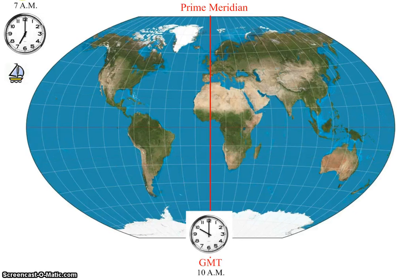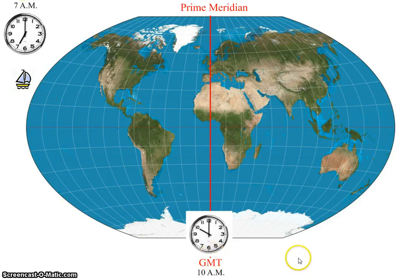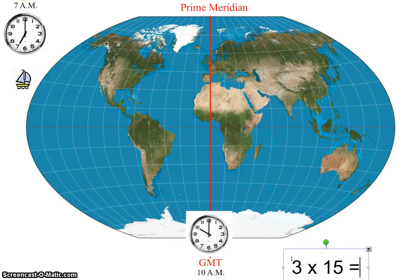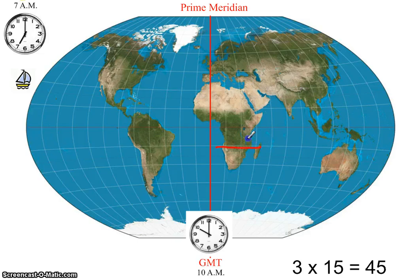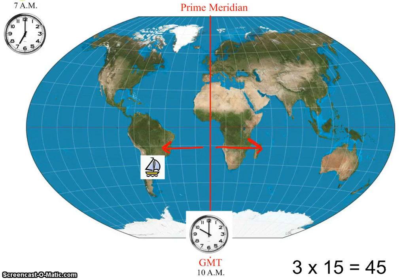Let's try another example. On the ship it's 7am, and in Greenwich, England it's 10 o'clock in the morning. From 7am to 10am is a three-hour difference, so we're three time zones apart. Each time zone is 15 degrees wide, so we are 45 degrees away from the Prime Meridian. The ship's time is earlier than Greenwich, so we must be to the west — because traveling west means subtracting an hour per time zone. The longitude is 45 degrees west.